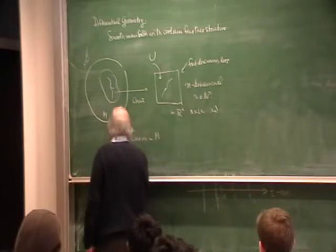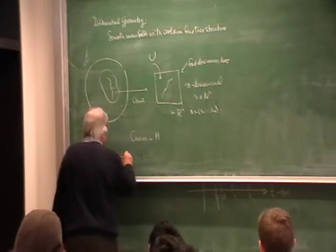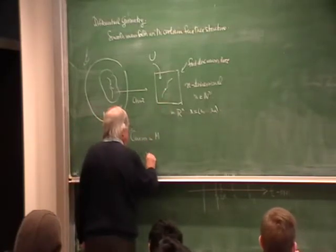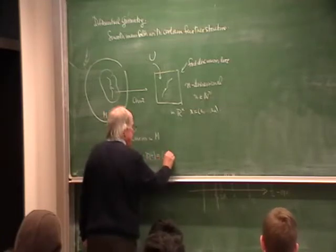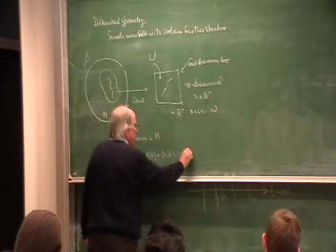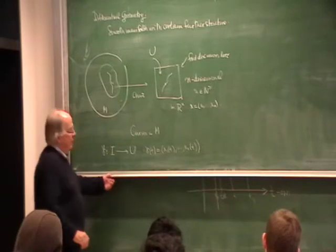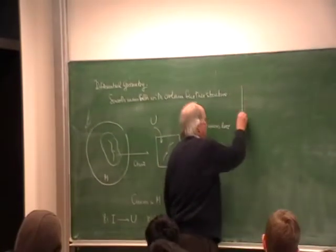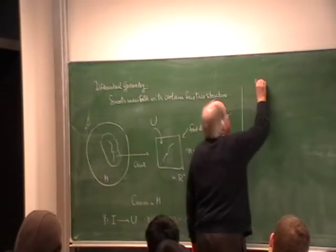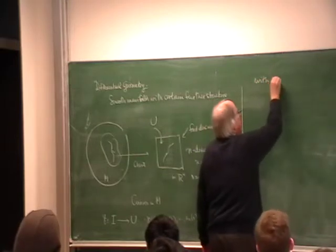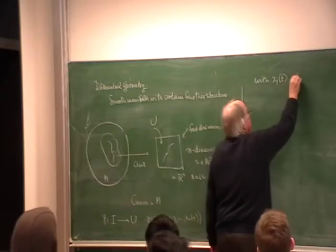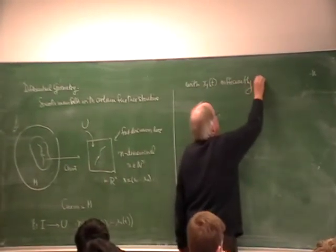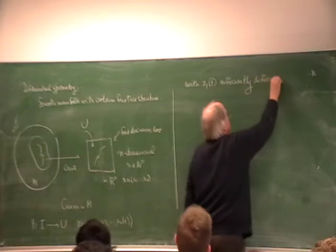A curve is a mapping from an interval into U, because I want to consider curves in U. And so, I can write it in coordinates, gamma t, is x1 of t, xn of t. And all curves occurring in this lecture will be with the assumption xj of t sufficiently differentiable in the classical sense.